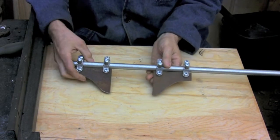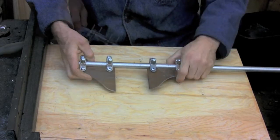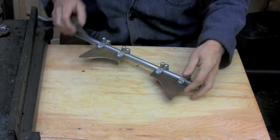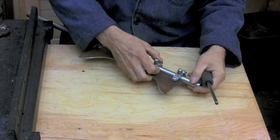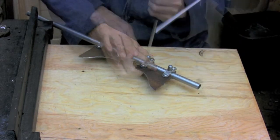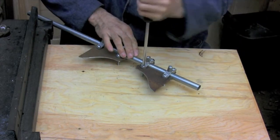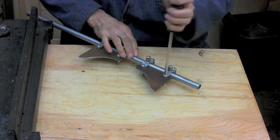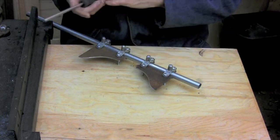I currently have the legs of the gauge facing each other so that means they would be used to take an outside measurement. By reversing their position I can set up the gauge to take an inside measurement.